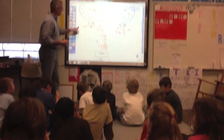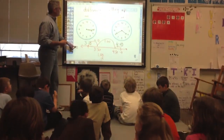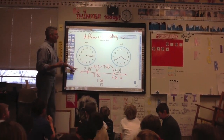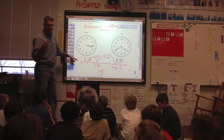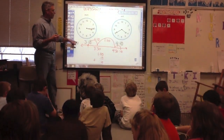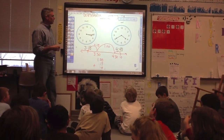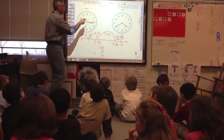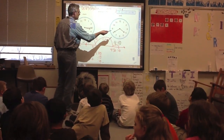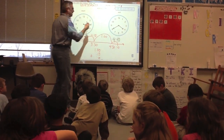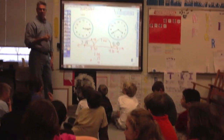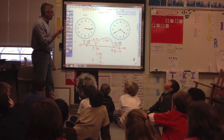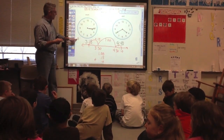So using this strategy — adding on, or adding up — is what we found yesterday to be about the best way to find elapsed time. Because elapsed time is the difference between the beginning, when something starts, and when something ends.